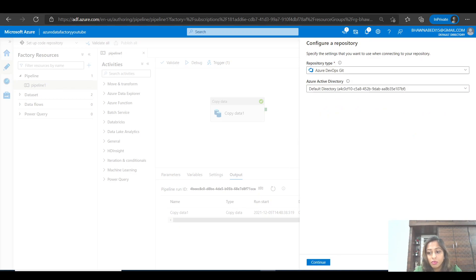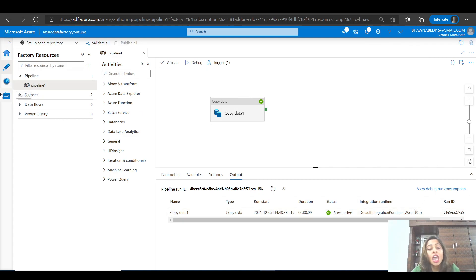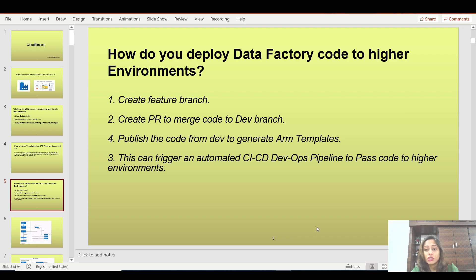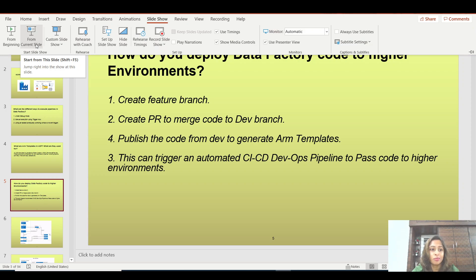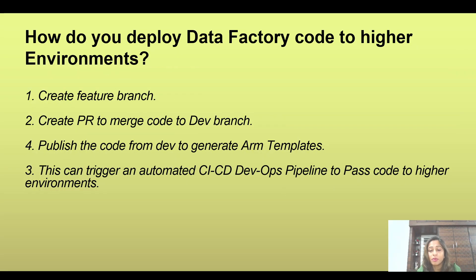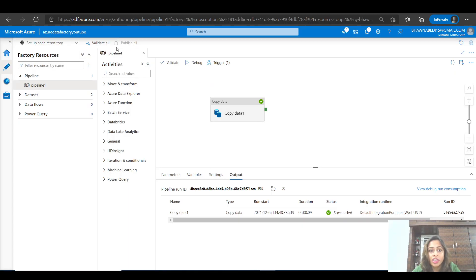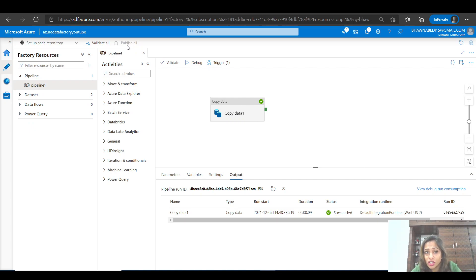Once the code repository is set up — and this is a big topic covered in the previous video — you create a feature branch. A feature branch is a branch where you execute your own code without affecting development, UAT, or production. You create your code in the feature branch, then create a pull request to merge from the feature branch to the development branch. Once code is in the development branch, you come back to Data Factory and click the Publish All option, which generates ARM templates in the repository.